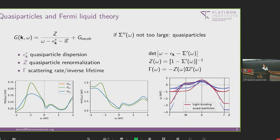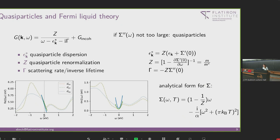This quasi-particle picture works as long as the imaginary part of the self-energy is not too large. In the low-frequency Fermi liquid regime, we can expand the self-energy as a Taylor series: a linear term in the real part and a quadratic term in the imaginary part. Z is a frequency-independent constant from the slope of the real part of the self-energy — one minus the slope, inverted — and is related to the mass renormalization. The scattering rate is the imaginary part of the self-energy at zero frequency times Z.